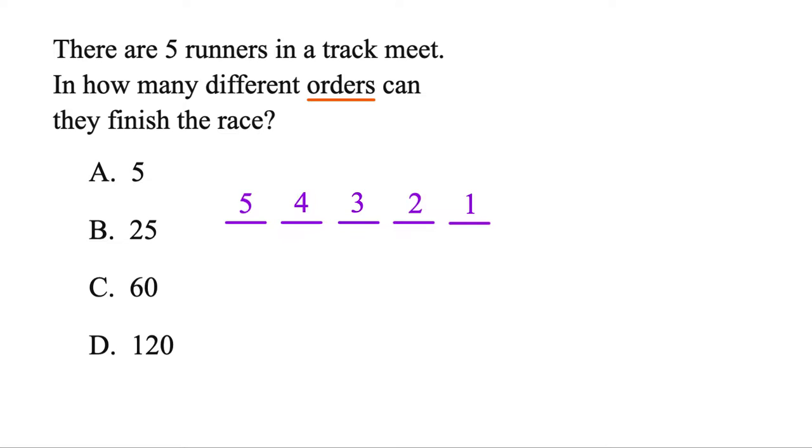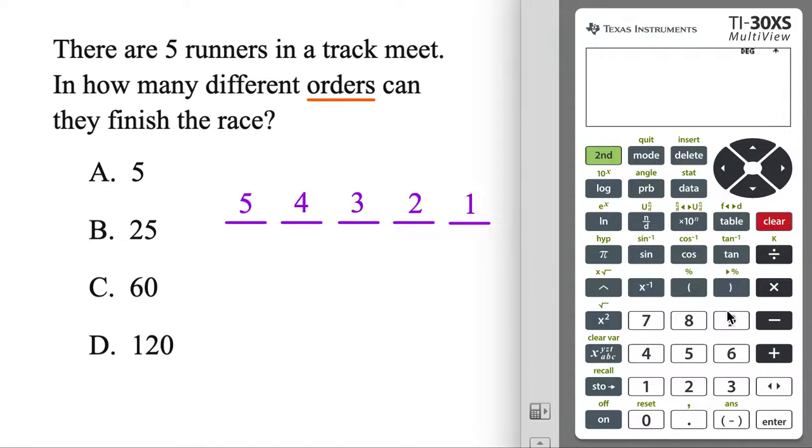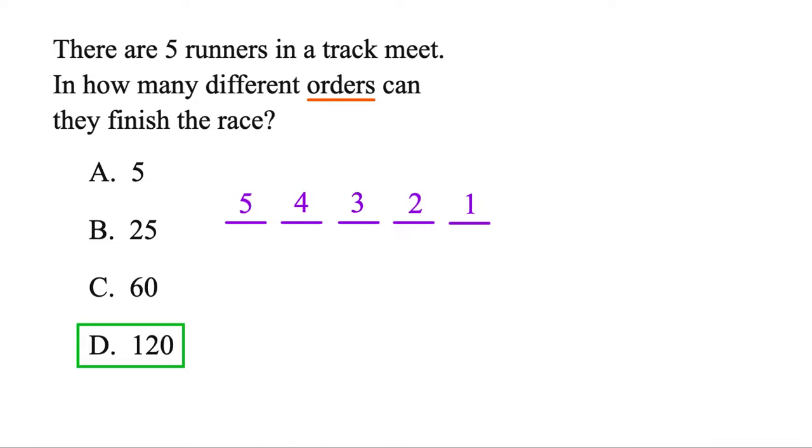From here, you're just going to multiply these together. And it's going to tell us the order that they could finish in all positions here. We'll go ahead and do our 5 times 4 times 3, 2, and 1. So finally, there's 120 ways that they could finish this race here. So anytime they give you one number and ask for the order, start with that, multiply down to 1, and you got it.